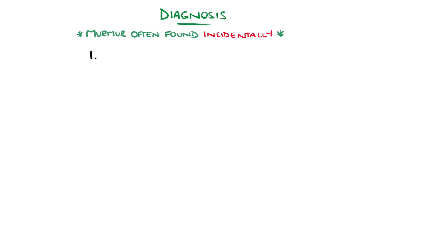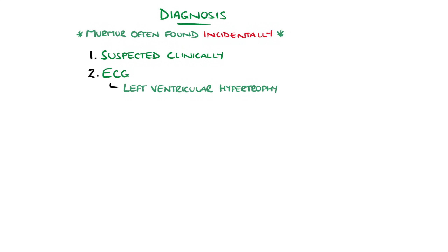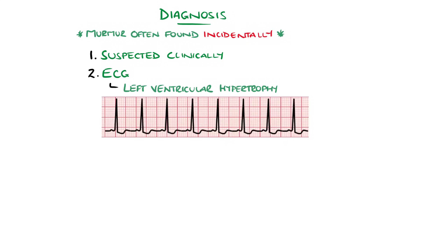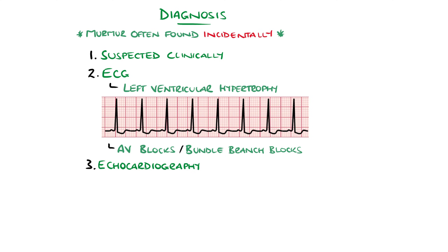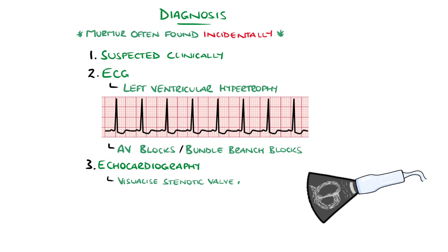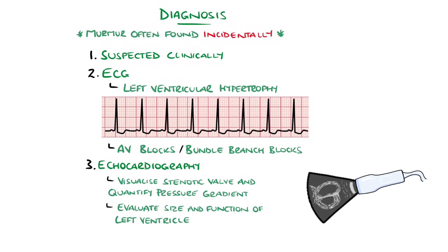ECG will usually show left ventricular hypertrophy, but may also show conduction pathologies such as atrioventricular or bundle branch blocks. The diagnosis is confirmed through echocardiography, as it can identify a stenosed valve, assess the pressure gradient across the valve, and evaluate the size and function of the left ventricle.